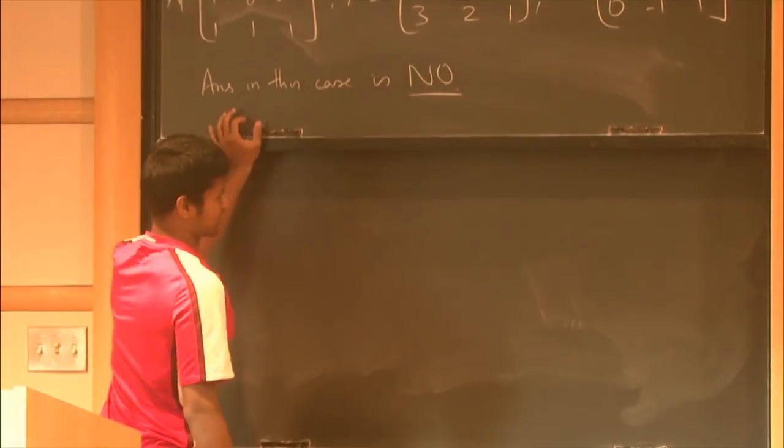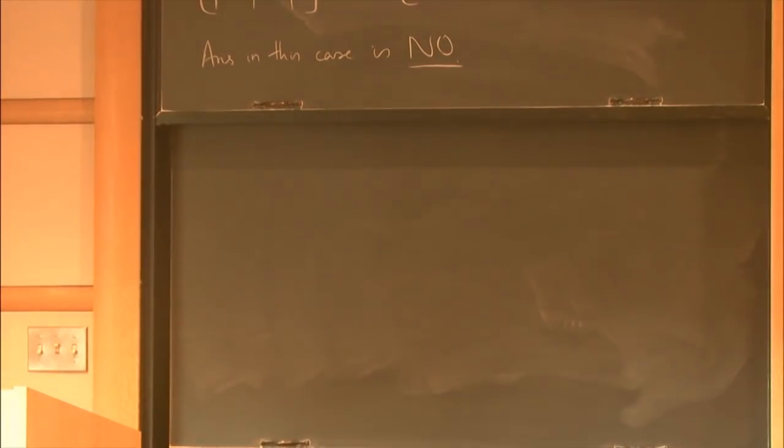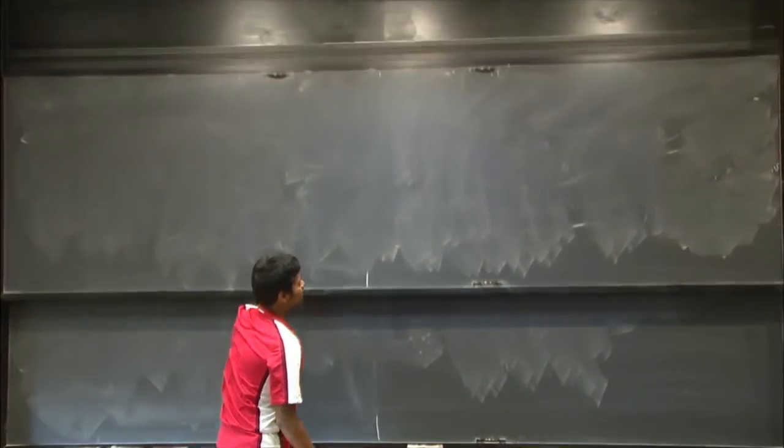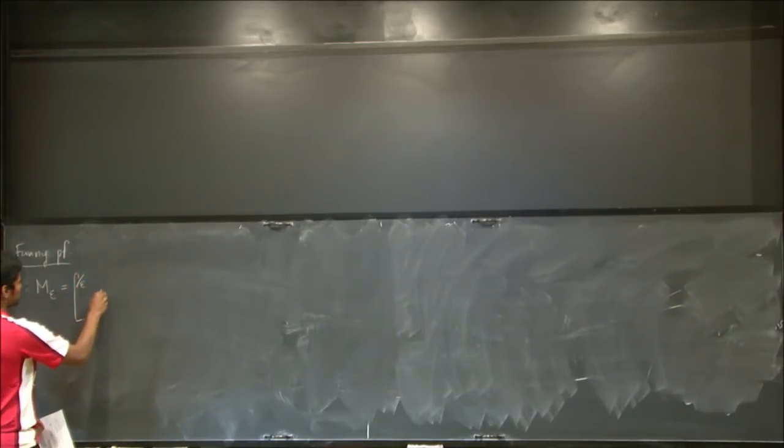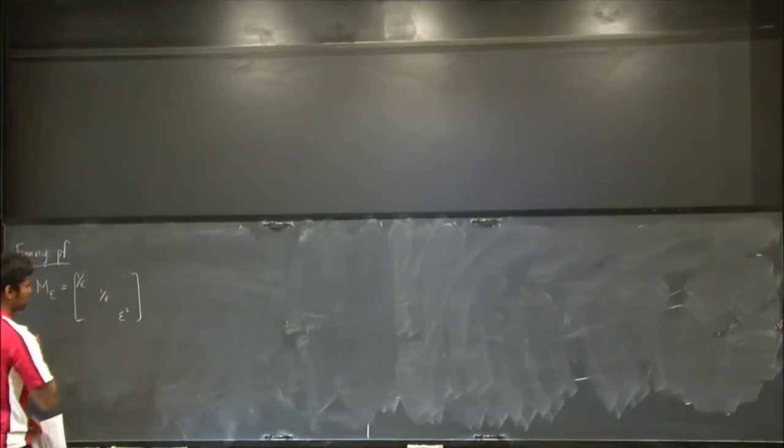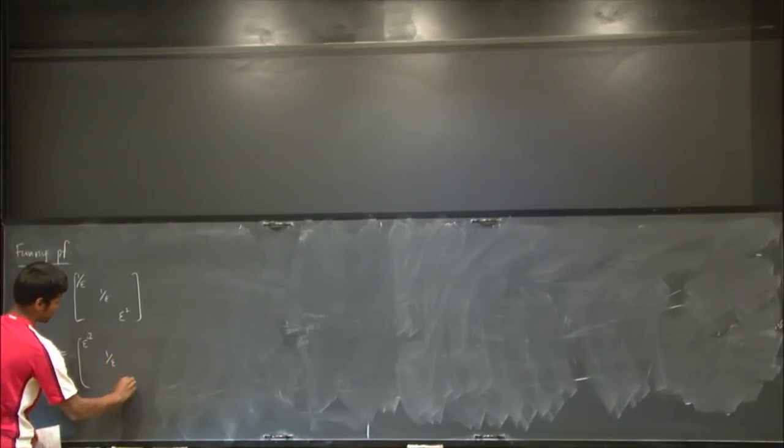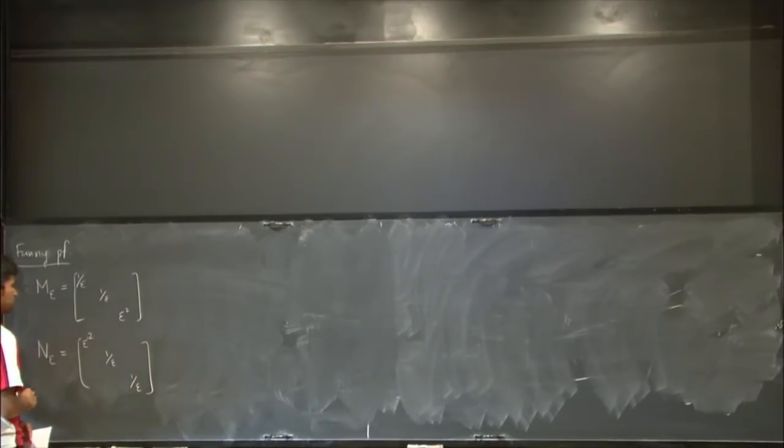But let me show you a funny way of doing this. So here's a funny proof. So let me define a matrix that depends upon epsilon. And I need to make sure I get this right. 1 over epsilon, 1 over epsilon, 1 over epsilon, and epsilon squared. And I also define another matrix, which is also going to look something like this. Epsilon squared, 1 over epsilon, 1 over epsilon.